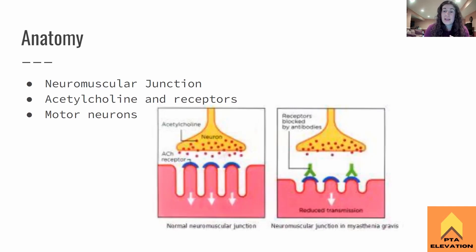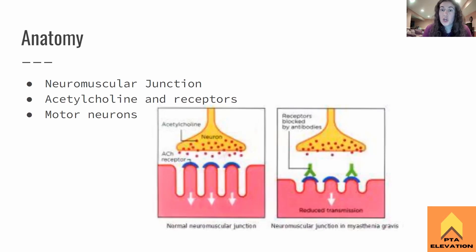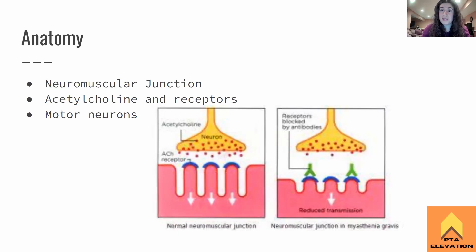With myasthenia gravis, the body's immune system produces antibodies — because remember, with autoimmune disorders the body thinks itself is a problem and attacks itself. It attacks in the form of antibodies that block the receptors. Essentially, neurotransmitters come along and get blocked by these antibodies and can't bind to the receptor. The antibodies are goalkeeping, blocking all the acetylcholine from attaching to the receptor on the other side. Therefore, the muscle isn't contracting.